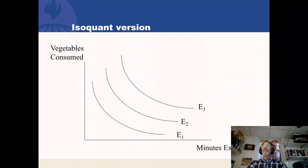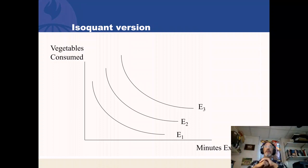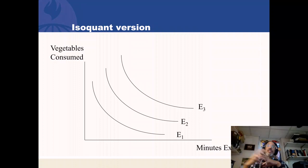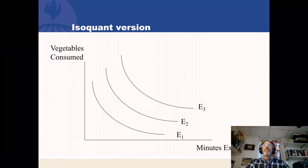Here's an isoquant version of how this model works. As a production model, one takes many inputs — I'm only picking two because isoquants are two-dimensional. I can produce health by consuming vegetables and spending time exercising. Various combinations of vegetables and minutes exercising can improve my health stock. All values on an isoquant represent the exact same level of the health stock, so if I lower the number of vegetables from E3 to any point on E2, I would reduce my amount of health.